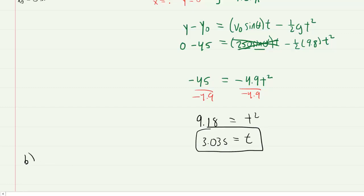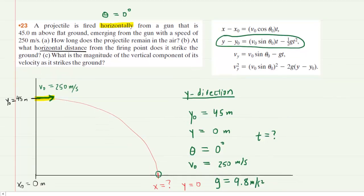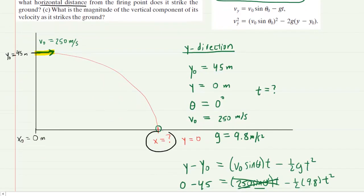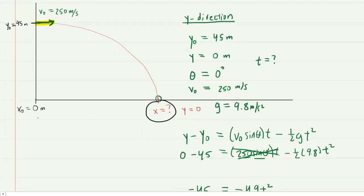Let's go up and look at part B. It asks us the horizontal distance from the firing point. So basically it's asking us for the final x-coordinate of the projectile right before it hits the ground. In this case, it's going to be useful to write down everything we know in the x-direction.